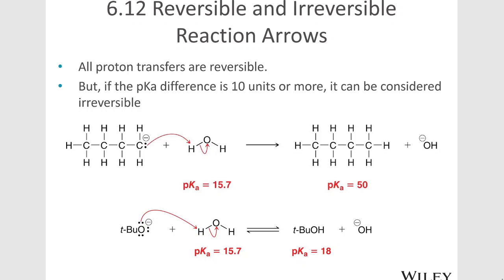Proton transfers are generally reversible, but if the pKa difference is 10 units or more, it can be considered irreversible. So here we have a pKa of 15.7 on the water and a pKa of 50 on the alkane. You're not going to pull the hydrogen back off of that alkane with hydroxide. That is an irreversible reaction arrow.